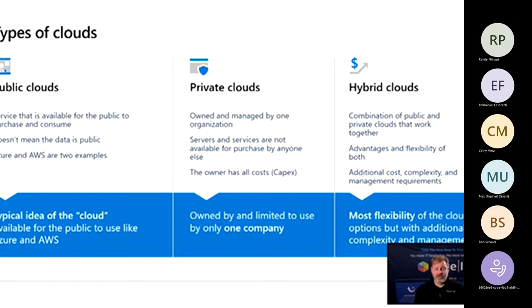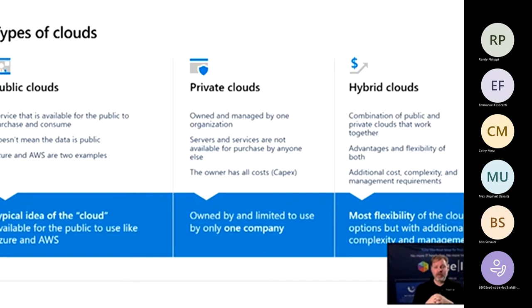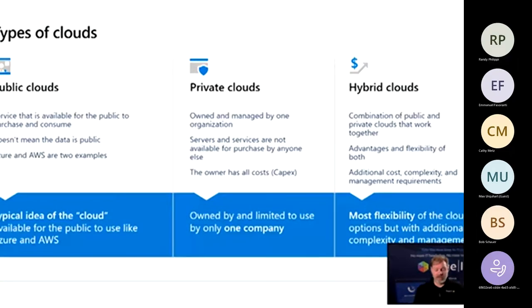The next category is private clouds. A private cloud uses similar technology as a public cloud — a group of servers networked together to share data and workloads — however, they're private in the sense that they're owned by one organization or company and not available for public consumption. Typically they're set up to provide data and services for the company that owns them, and the owner bears all costs of the equipment, maintenance, and support.